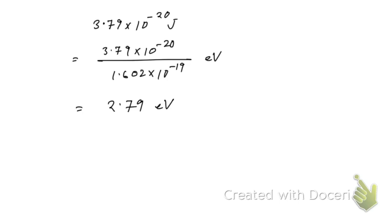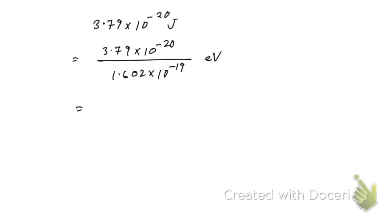Let me check once more — it is supposed to be 0.236 electron volts. That should be the correct answer. I hope you understood this. Thank you for watching. See you in the next video where the remaining questions will be solved. Bye bye.